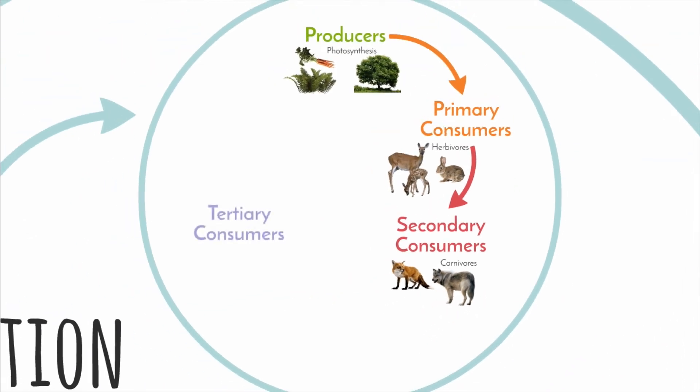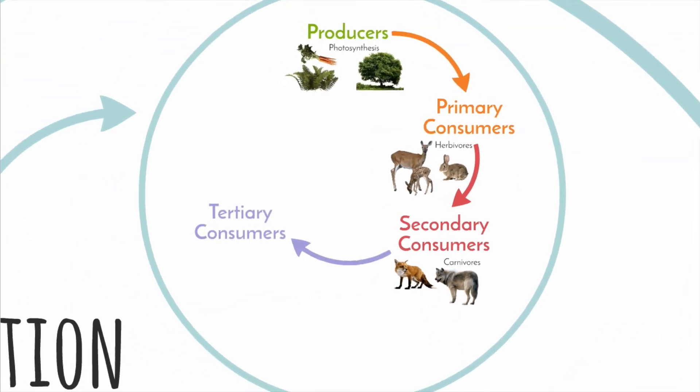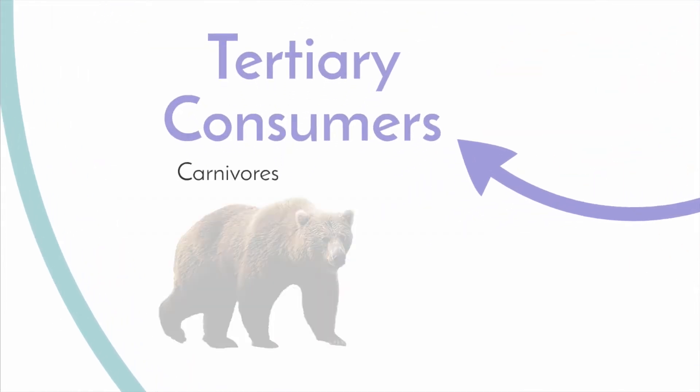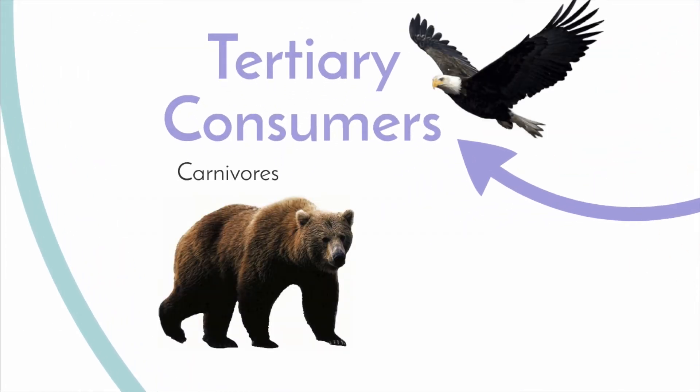Tertiary consumers are heterotrophic living things as well because they feed on secondary consumers, so they are also carnivores.